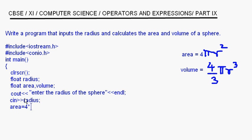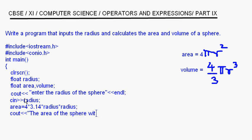After this, calculate the area. Area is 4 into pi — pi has the value 3.14 — into r squared, that is radius into radius. Now I am going to put the cout statements. cout: "The area of the sphere with radius" and here I put the variable radius, then "is", then area, and then endl.